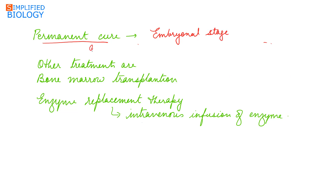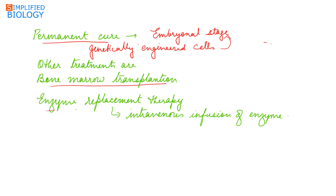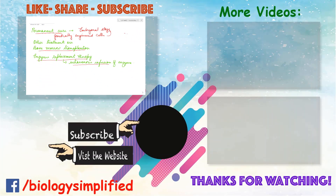Genetically engineered cells should be introduced into the cells of the embryo for a permanent cure. Besides gene therapy, other treatments given to an ADA patient include bone marrow transplantation and enzyme replacement therapy, in which the adenosine deaminase enzyme is regularly given as an intravenous infusion.